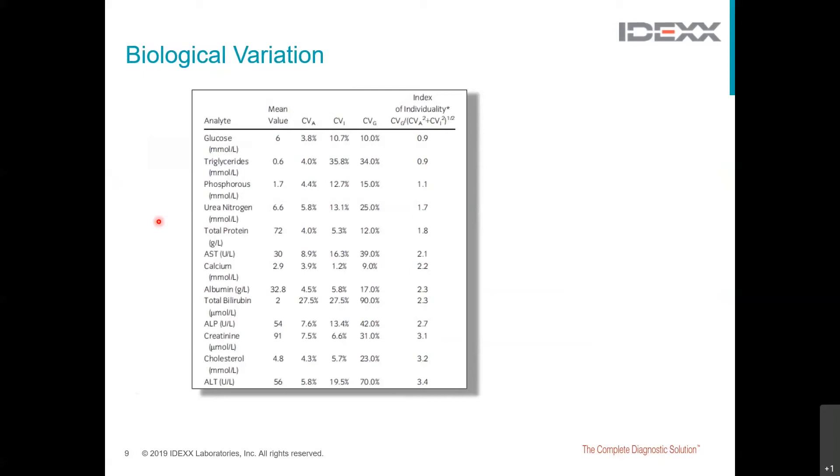So based on this criteria for this particular population of dogs, we can see that use of a population-based reference interval is marginally appropriate for serum glucose and total triglyceride concentrations, but becoming a little bit questionable for serum phosphorus. We can see that for the remaining analytes, the index of individuality is greater than 1.7, so this means that a population-based reference interval is of limited utility.